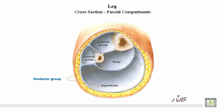In this transverse section of the leg: this is the tibia, and this is the fibula, this is the interosseous membrane, the anterior septa, and this is the posterior septa. This is the anterior compartment or extensor, the lateral compartment or peroneal, and the posterior compartment or flexor, which is subdivided into deep and superficial layers.